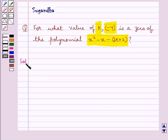Let's proceed with the solution. Consider the given polynomial to be p(x) = x² - x - (2k + 2).